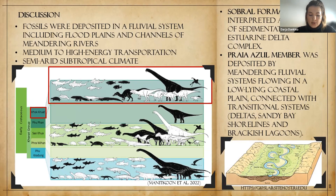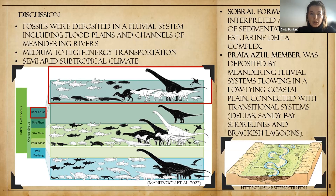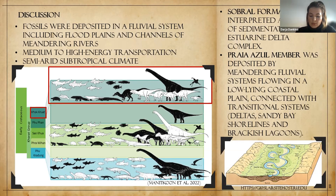I found studies about Cretaceous fauna embedded in fluvial and alluvial plain facies in Hungary, and also finds from southern Portugal, where authors concluded about transgressive-regressive cycles in a shallow marine to transitional and continental environment. Something similar happened during the late Jurassic. The Sobral Formation is interpreted as the result of sedimentation in an estuarine delta complex, and the member that includes my study area was deposited by a meandering fluvial system flowing across a low-lying coastal plain connected with transitional systems like delta, sandy bay, shoreline, and brackish water environments.